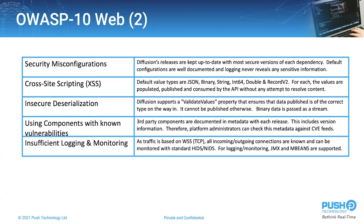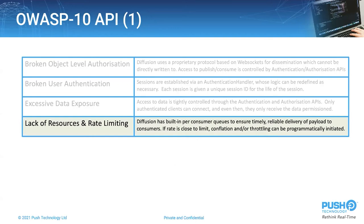That's the first OWASP 10 focusing on web applications. There is another OWASP 10 on APIs — there is a lot of overlap with the web version, so I'll just pick out the ones that are different. Lack of resources and rate limiting: Diffusion has a built-in per-consumer queue that ensures timely, reliable delivery of data to every client. If a queue is getting close to its size, server-side applications can make a proactive decision to invoke conflation or throttling, preventing any form of denial of service by consuming too much.